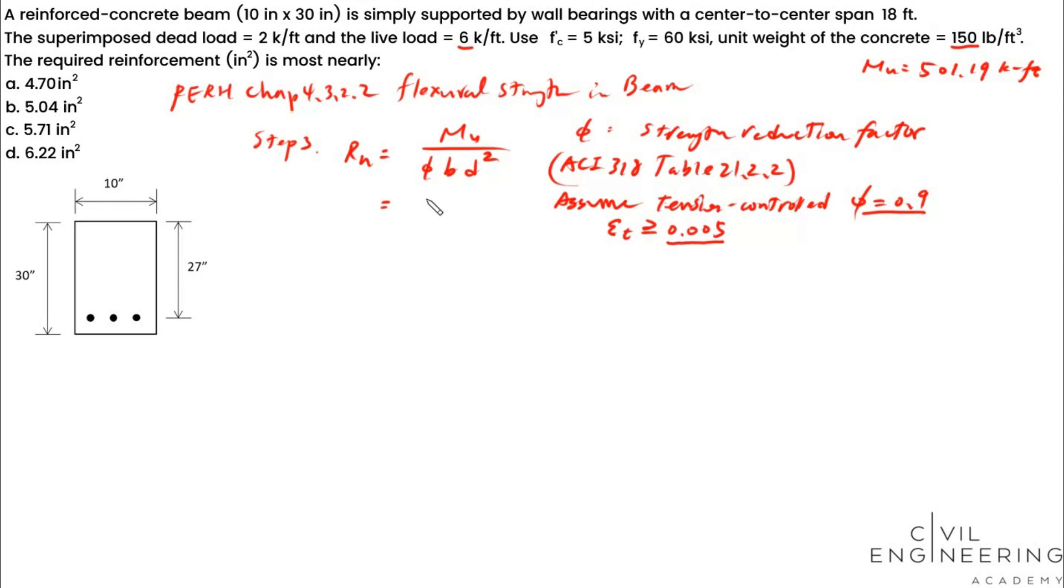So Mu is 501.19, and I like to convert that into kip-inch. Phi is 0.9. B is the width of the cross-section, which is 10 inches. D is the distance from top fiber to the center of the reinforcement, which is also being provided here, 27. So you're having Rn equals 0.917, and the unit is kip per square inch.